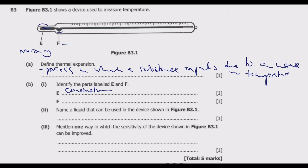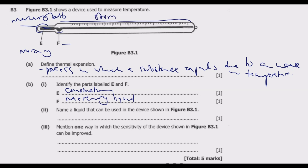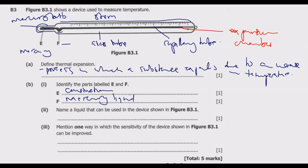We also have the mercury bulb. Remember, F is the constriction and E is the mercury liquid. The other part you need to know is the stem — that's the main body. You also have the glass tube, then the capillary tube. Finally, the white part remaining is known as the expansion chamber, which is the room left for the liquid to expand. The liquid used is most likely mercury, but alcohol can also be used.